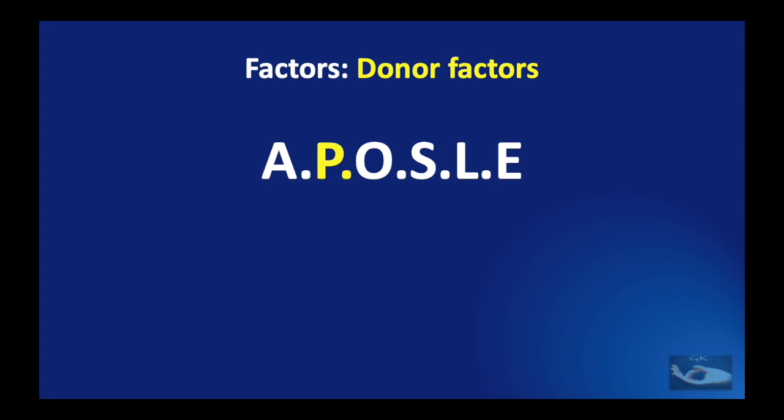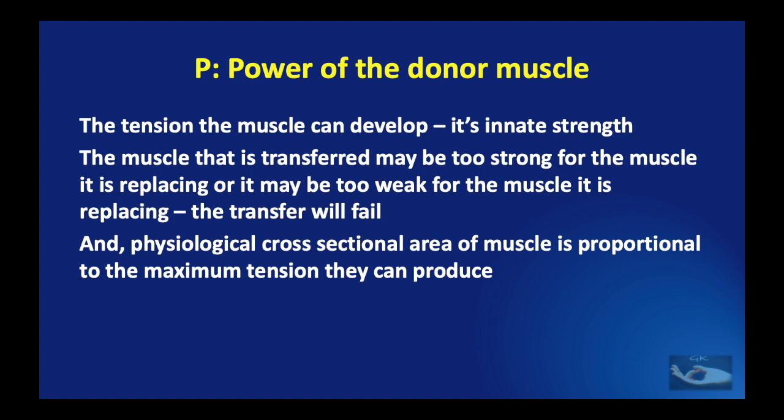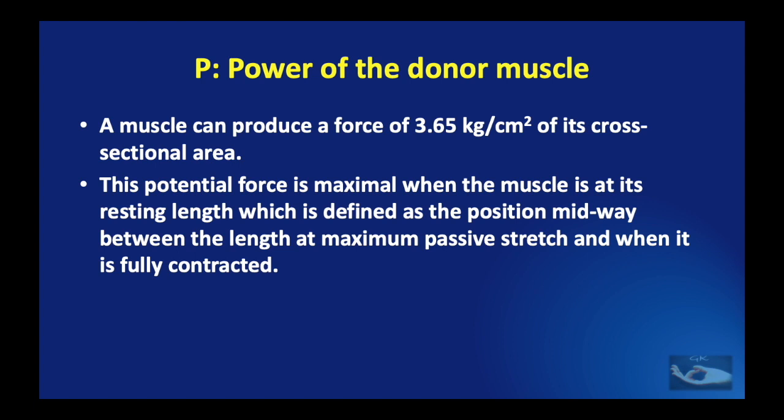Now let us consider the P — the power of the muscle. The tension that any muscle can develop is its innate strength. The muscle transferred may be too strong or too weak for the muscle it is replacing, and in both conditions the transfer will fail. It is the physiological cross-sectional area of the muscle which is proportional to the maximum tension that the individual muscle can produce. Any muscle can produce a force of 3.65 kg per square centimeter of its cross-sectional area. This potential force is maximal when the muscle is at its resting length, defined as the position midway between the length at maximum passive stretch and when it is fully contracted. We need to remember this when adjusting the tension of the tendon transfer.